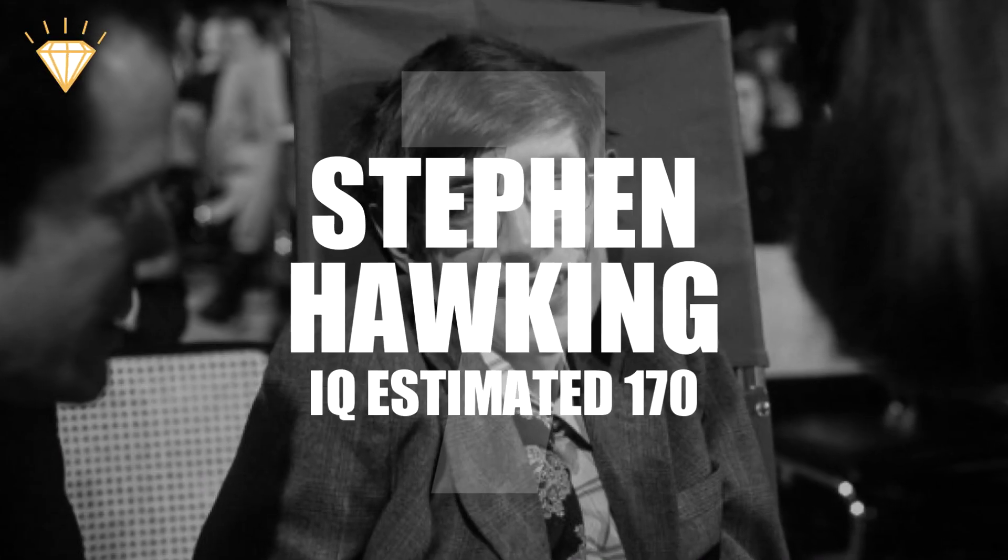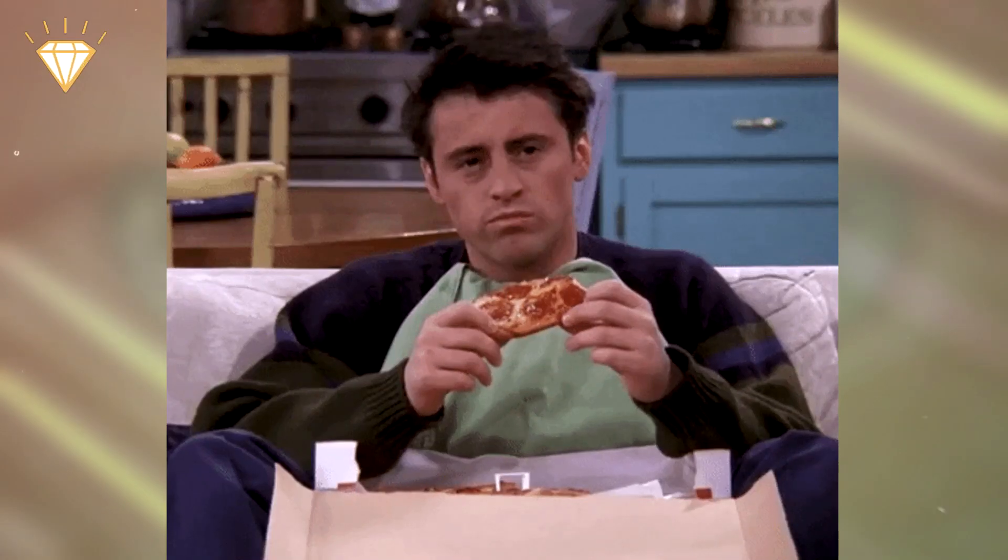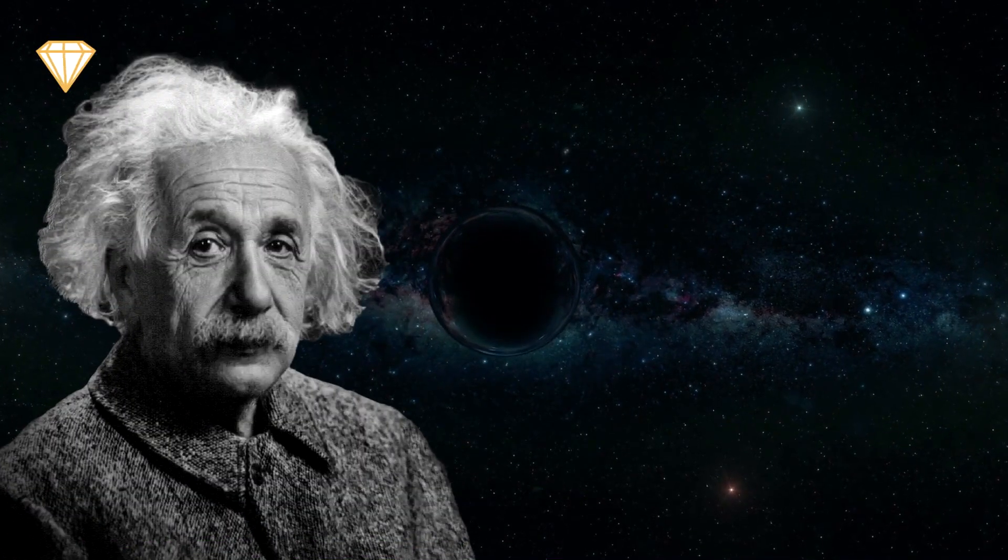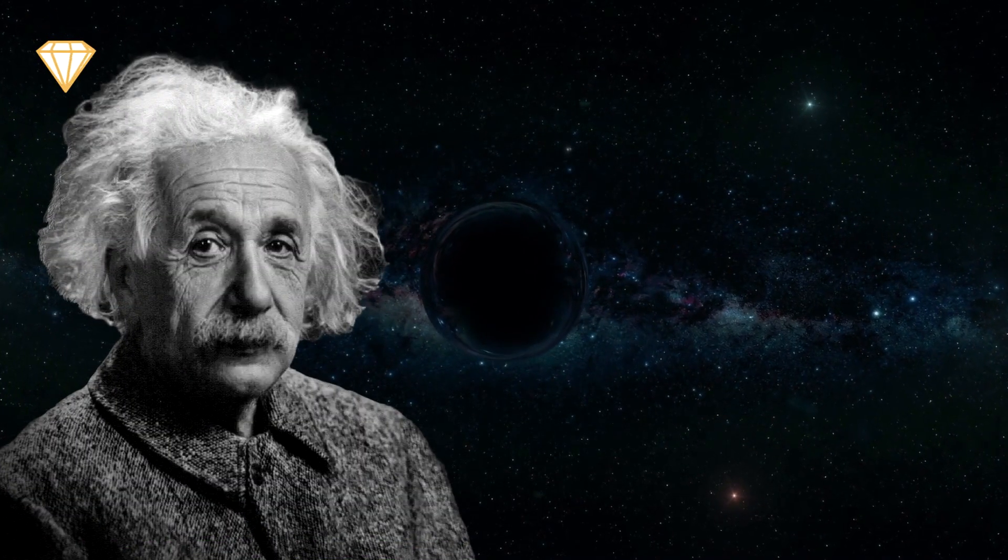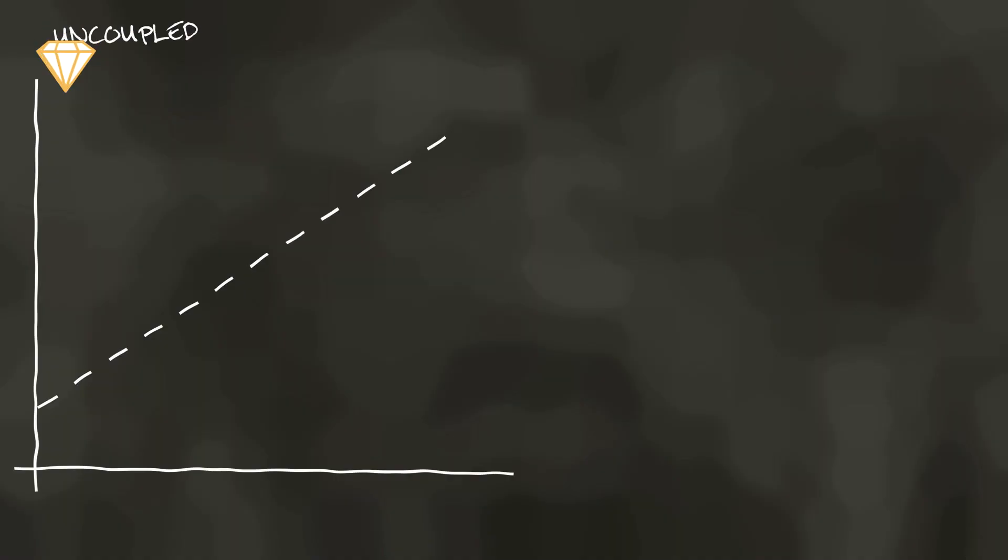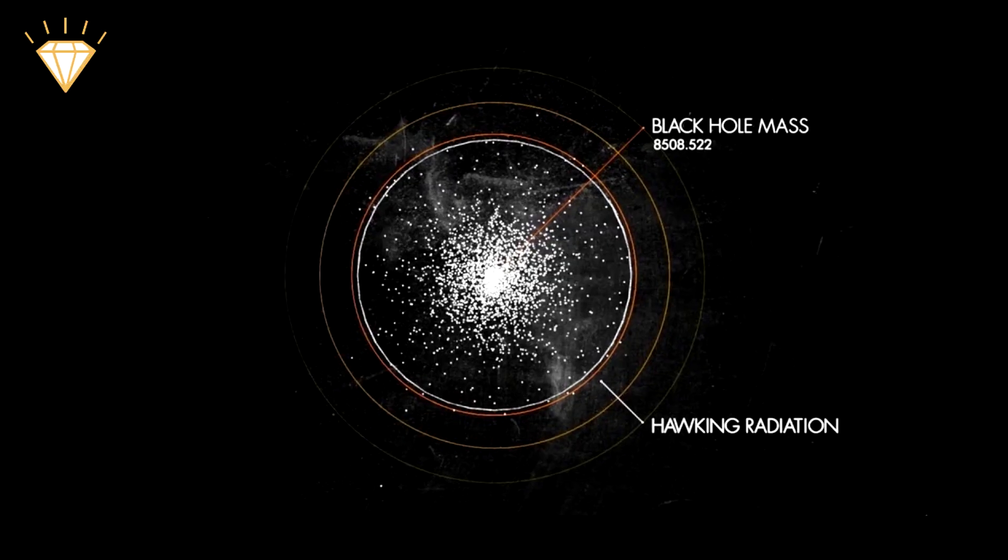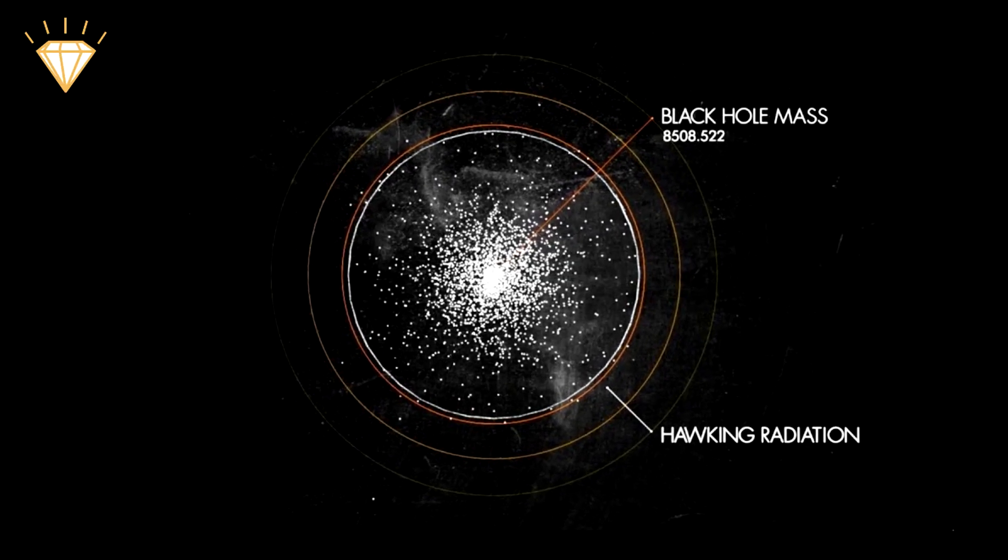Number 7, Stephen Hawking. I know what you're thinking, if Stephen Hawking is at number 7, who's going to be at number 1, right? Stephen's greatest discovery was that contrary to Einstein's belief that nothing including light can escape from the inside of a black hole, due to subtle consequences of quantum physics, they do emit radiation. And this is now known as Hawking radiation.